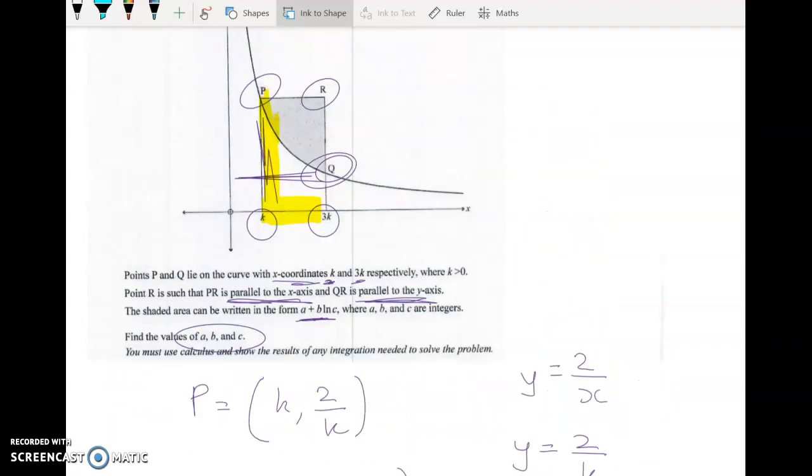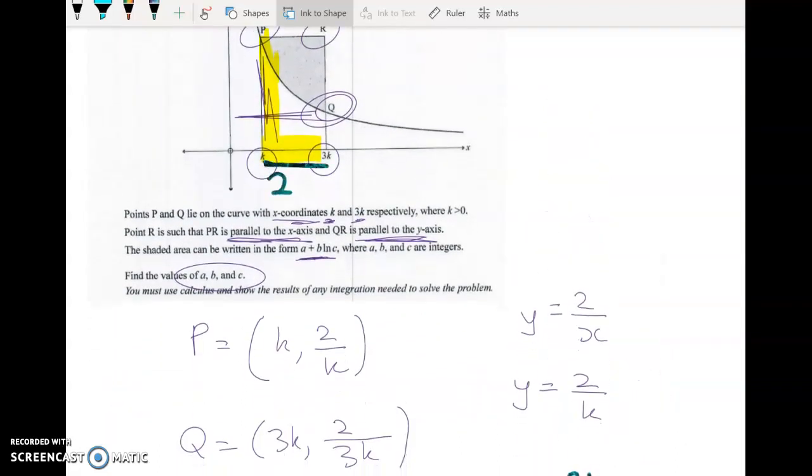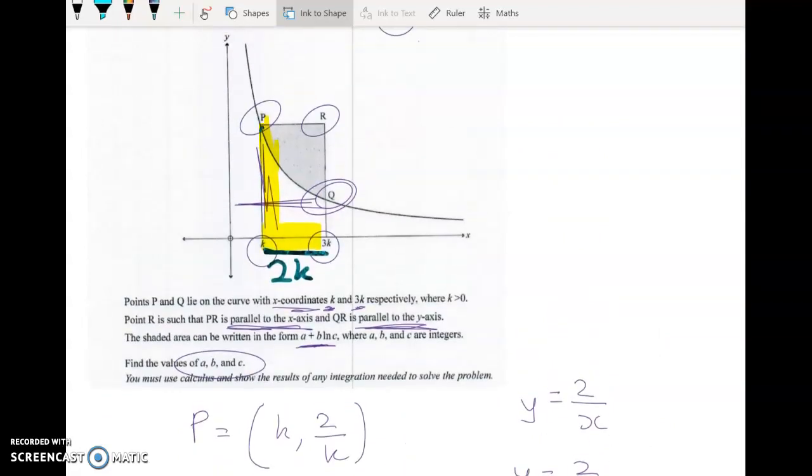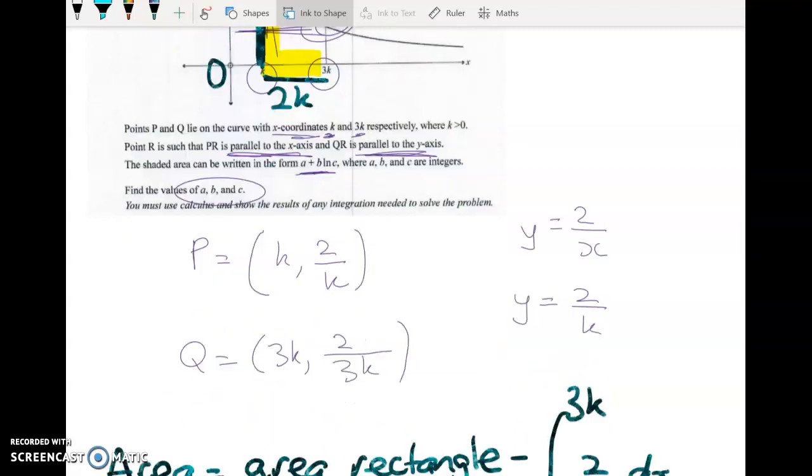So this has a length of 3k minus k, which is 2k. And the height here, well this is 0, and we know that that coordinate there is 2 over k. So that's the height of the rectangle.